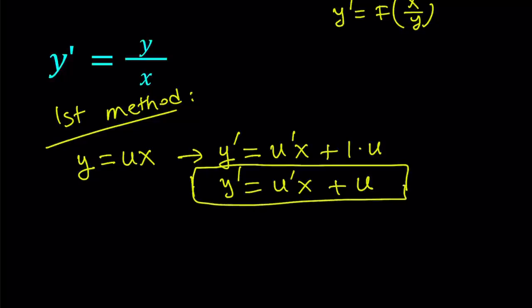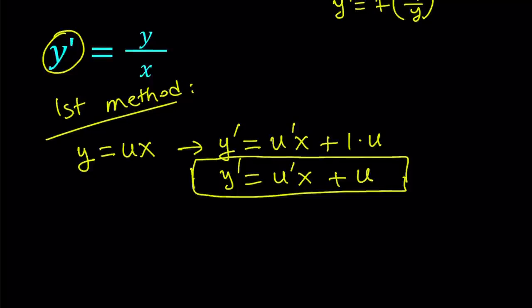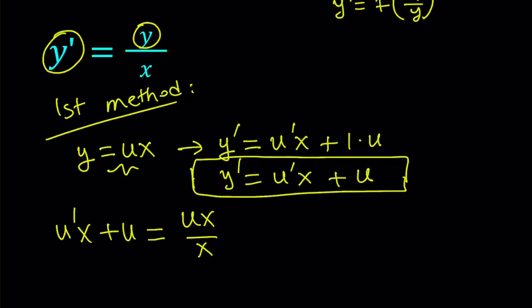Let's substitute this into our equation. On the left hand side we have y prime and I'm going to replace it with u prime x plus u. On the right hand side I have y over x, so I'm going to replace y with ux and divide by x, giving you u. After cancelling out the u's, note that if y is zero then y prime is zero, which is also a valid solution.